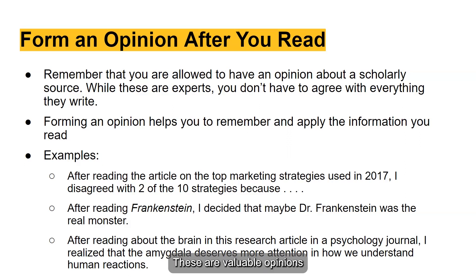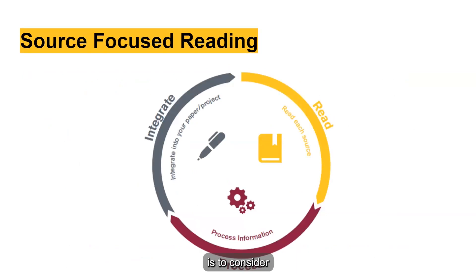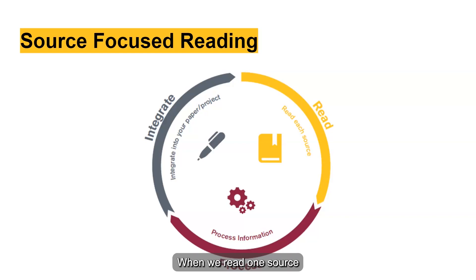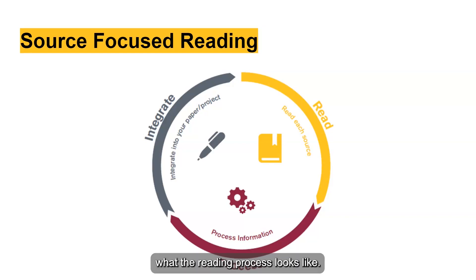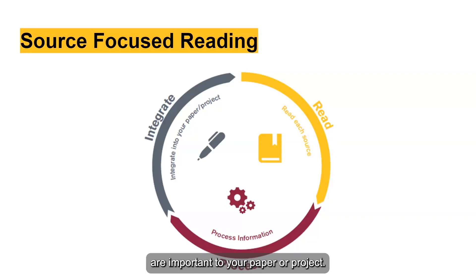These are valuable opinions that you can form after reading scholarly research. Another aspect of critical reading is to consider if you are being source-focused or synthesis-focused. When we read one source, or go source by source, this is often what the reading process looks like. We start by reading and annotating, then process the information, and consider what pieces of the source are important to your paper or project.